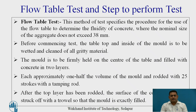Flow table test and its steps to perform the test. The flow table test is a method of testing — specifically the procedure for using the flow table to determine the fluidity of concrete. There is a criteria that the nominal size of the aggregate should not exceed 38 mm. Before commencing the test, the table top and the inside of the mold is to be wetted and cleaned. The mold is to be positioned at the center of the table and filled with the concrete in two layers.